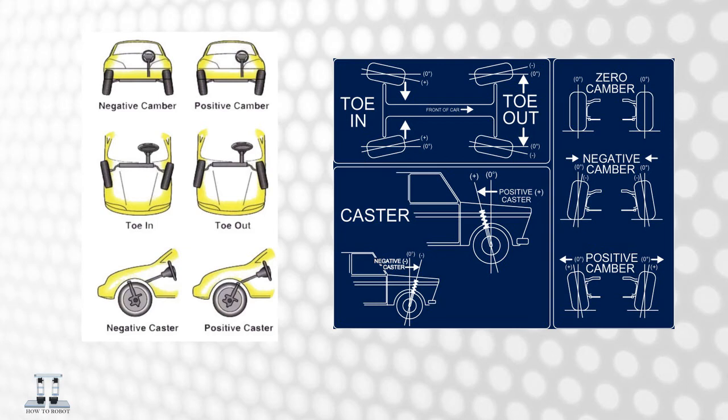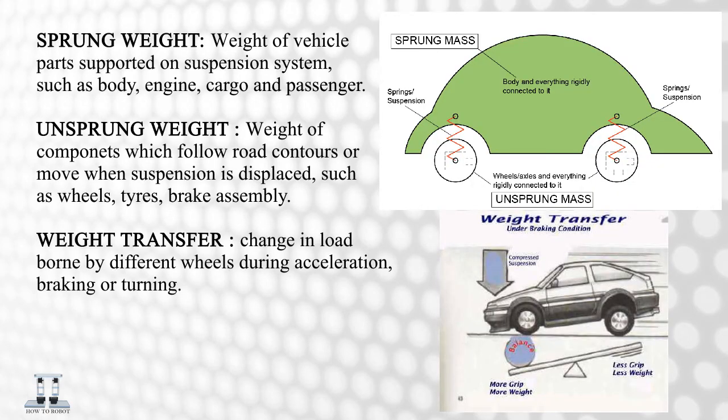These are a few more images. Sprung Weight: weight of vehicle parts supported on the suspension system, such as body, engine, cargo, and passengers. Unsprung Weight: weight of components which follow road contours or move when suspension is displaced, such as wheels, tyres, and brake assembly. Weight Transfer: it is the change in load borne by different wheels during acceleration, braking, or turning.